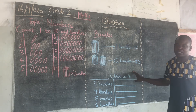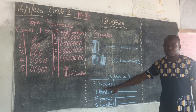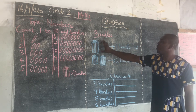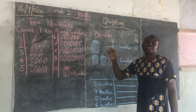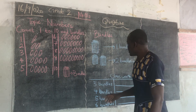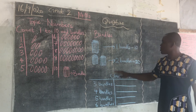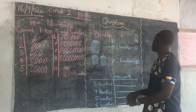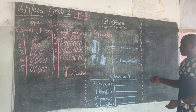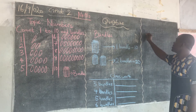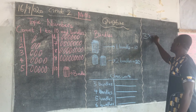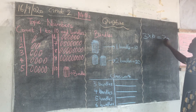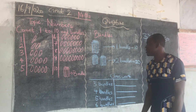Your classwork is this: 3 bundles gives you how many pencils? When you count, each bundle contains 10 pencils. 3 bundles should give you 30 pencils. In other words, you can easily do it like this: 3 times 10 gives us 30.